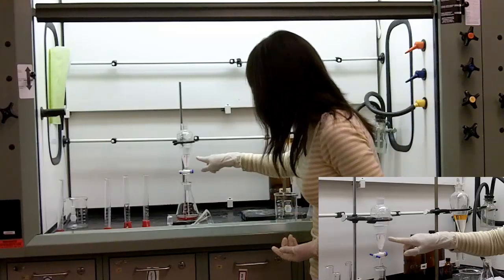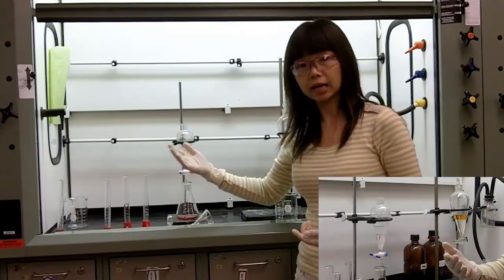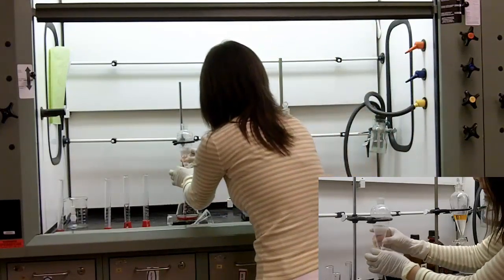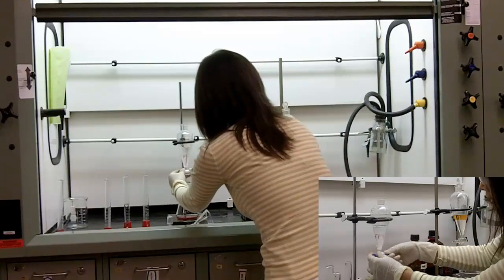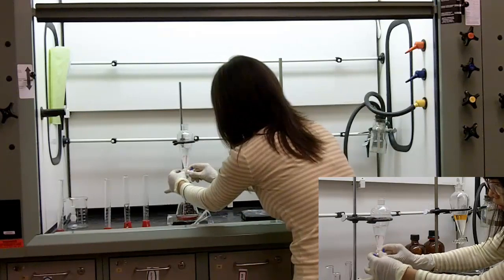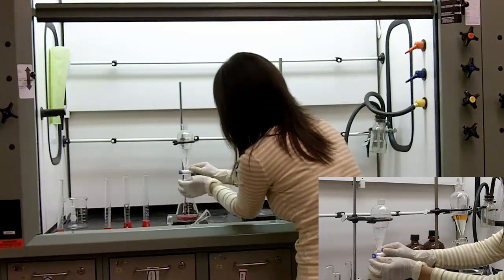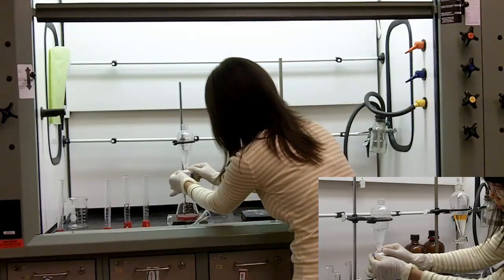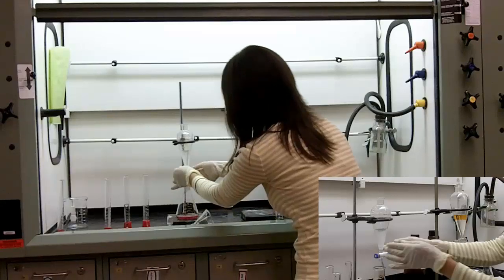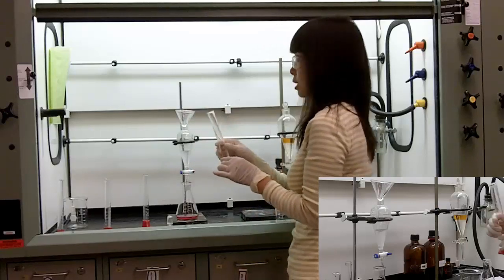In the second extraction, we don't have much compound left in the aqueous layer. You can see the color is getting lighter and lighter, it's pink now. Now we remove the stopper and drain the methylene chloride layer into the Erlenmeyer flask combined with the first extraction. Now we repeat the same steps for the third extraction.